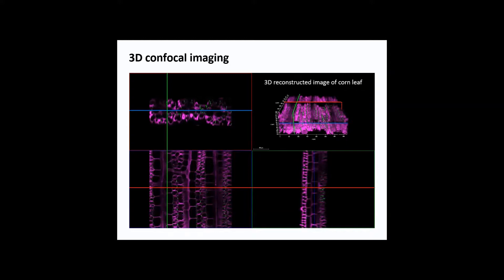Depending on what microscope you're using, you can use two channels or multiple channels simultaneously. After imaging you have this 3D reconstructed image. In this case I use corn, and depending on the software you can actually copy differently. The topmost is the transverse section, directly below is the paradermal section, and the lower right is the longitudinal section.